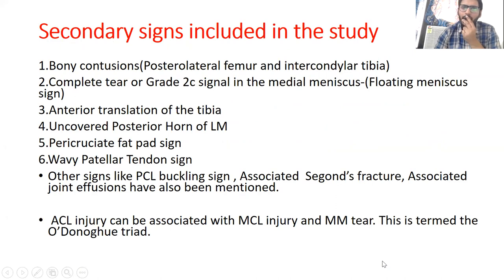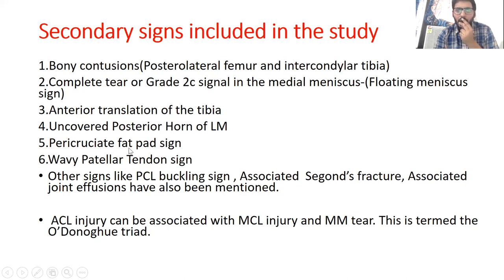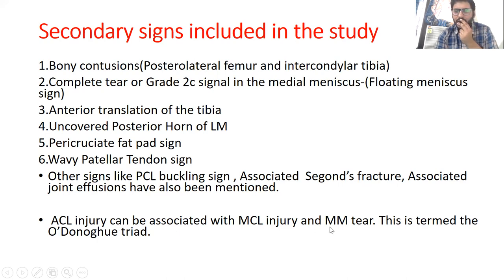The secondary signs included in the study are: bony contusions, complete tear or grade 2 signal in the medial meniscus, anterior translation of the tibia, uncovered posterior horn of the lateral meniscus, hyperintensity in the pericruciate fat pad, wavy patellar tendon sign, PCL buckling sign, associated Segond's fracture, and associated joint effusions. ACL tear is also associated with medial collateral ligament injury and medial meniscus tear, which together form the unhappy triad.